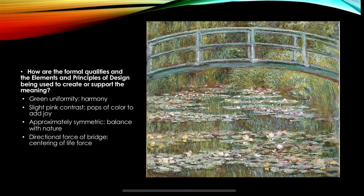In terms of the formal qualities that give us meaning, first we have the green uniformity of the picture, which creates harmony within the picture's elements and therefore creates harmony for the viewer. The slight pink contrast and lighter colors in the lilies add pops of color to convey an extra emotional layer of joy. The symmetricness of the painting represents the balance with nature that humans should have, and the directional force of the bridge at the center represents the centering life force that can be created through harmony with nature.